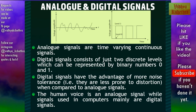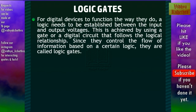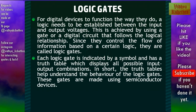The human voice is an example of an analog signal, while signals used in computers are mainly digital signals. Now we can see about logic gates. For digital devices to function the way they do, a logic needs to be established between the input and output voltages. This is achieved by using a gate or a digital circuit that follows a logical relationship. Since they control the flow of information based on a certain logic, they are called logic gates. Each logic gate has a truth table which displays all possible input-output combinations, helping us understand the behavior of logic gates. These gates are made using semiconductor devices.